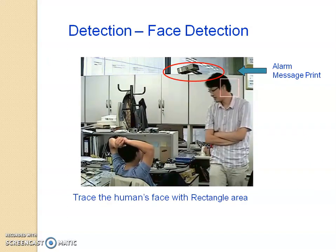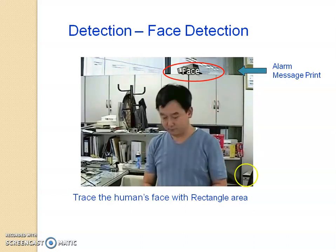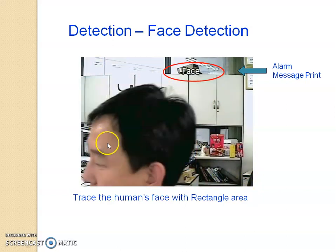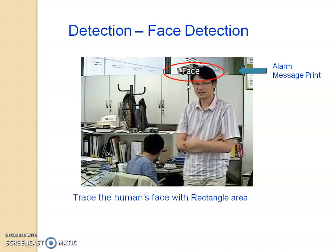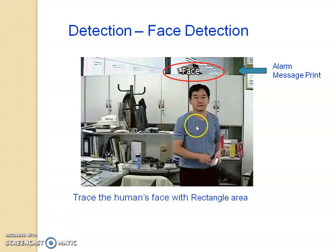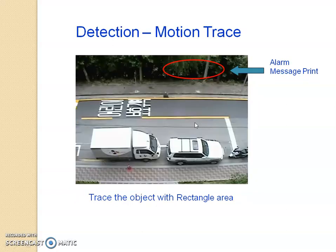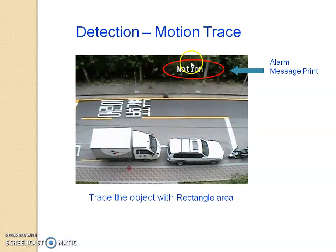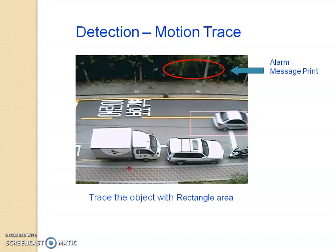The next feature is face detection. When a person is moving or entering the camera's view, the face is being detected. If the detected face is a stranger, the system will alert. That is an important tool in granting access in your building. Next is motion trace — once motion is happening, it is traced. A vehicle travelling through an area immediately triggers a message indicating motion in that particular area.